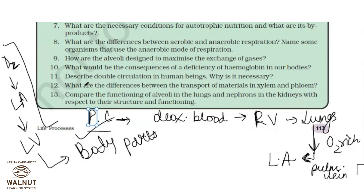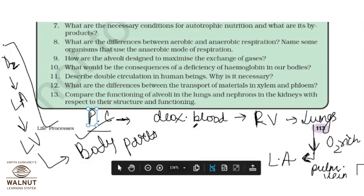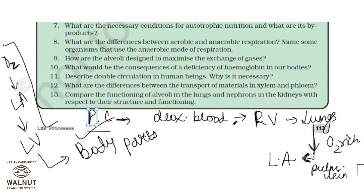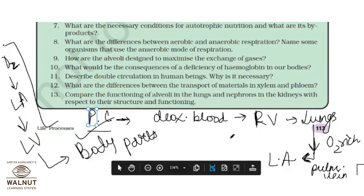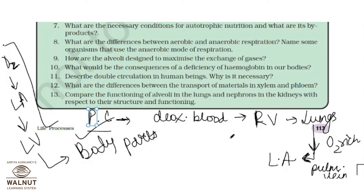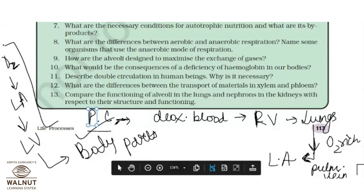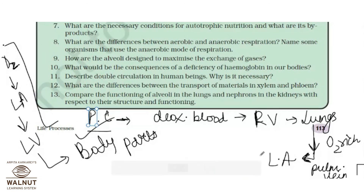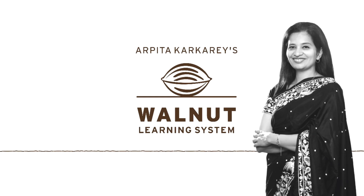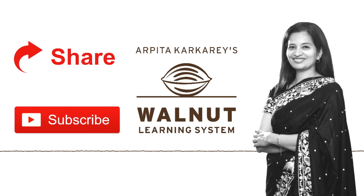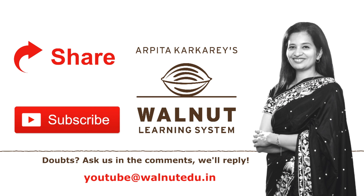In one cycle, the blood travels through the heart two times — once as oxygenated blood being distributed to the body, and once as deoxygenated blood returning for purification. That is why it is called double circulation. Pulmonary circulation plus systemic circulation together give you double circulation. If you like these videos, share and subscribe to the channel — keep watching and keep learning with Walnut.